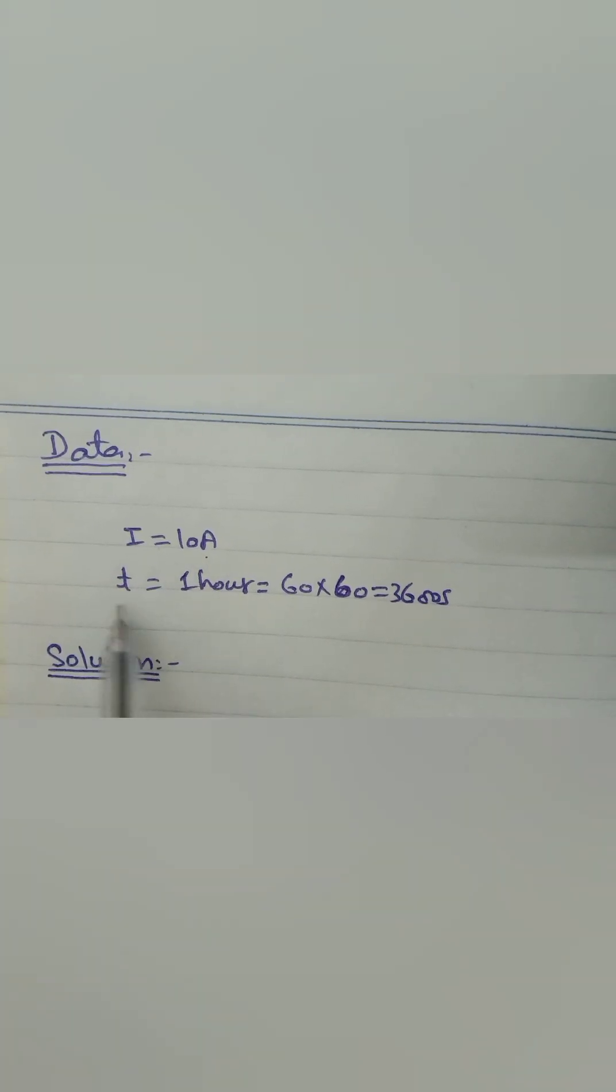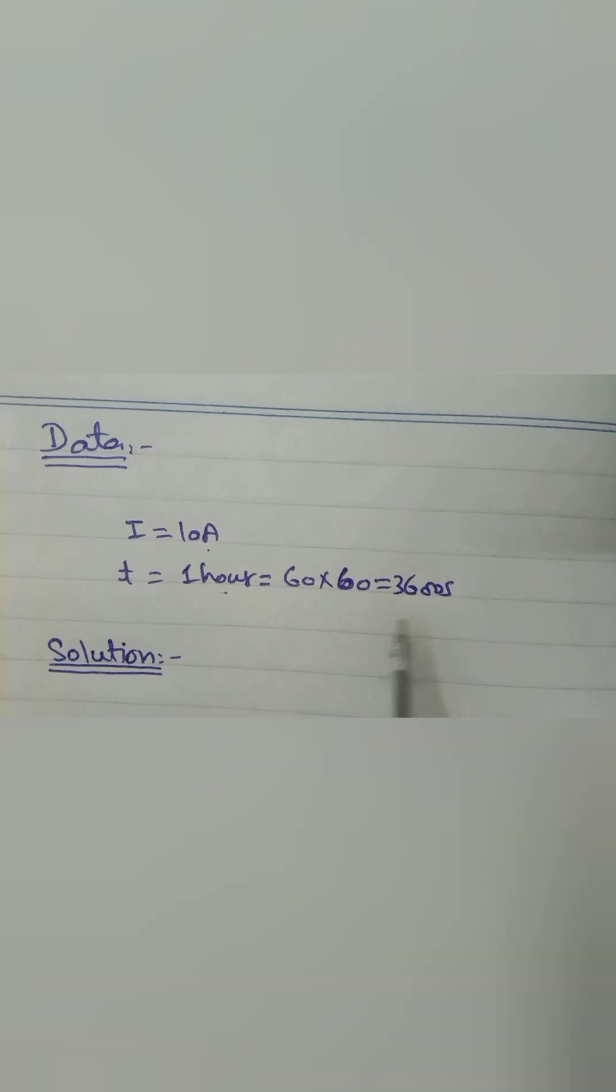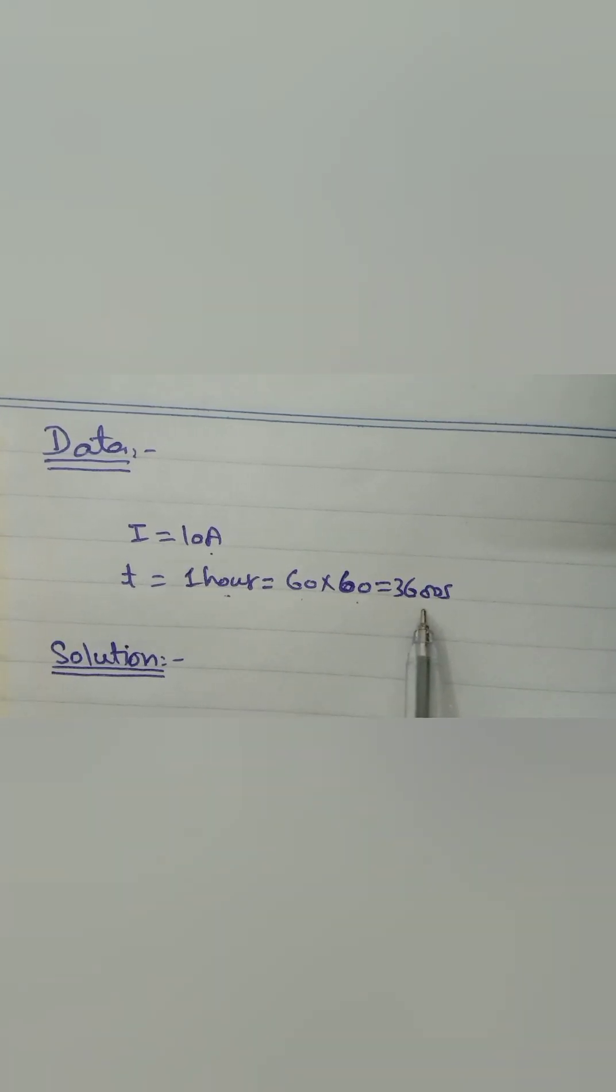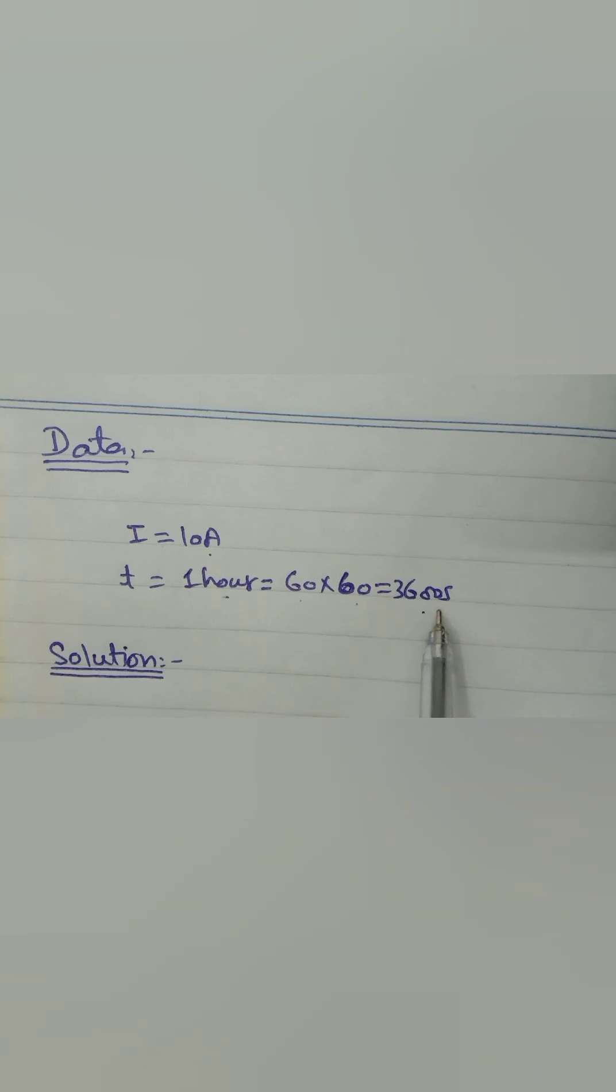We have given current is equal to 10 ampere. Time is 1 hour. We need to convert it into seconds: 60 minutes into 60 seconds gives us 3600 seconds.